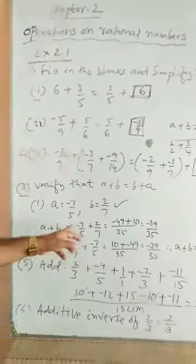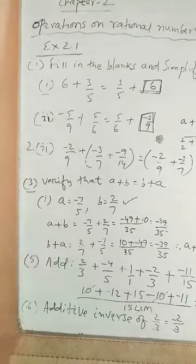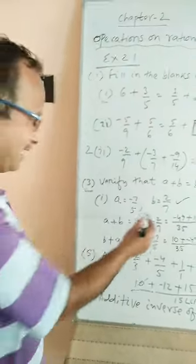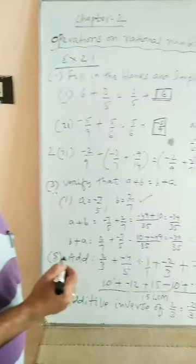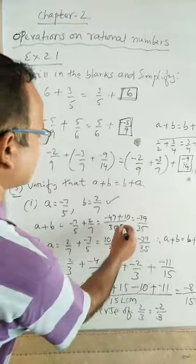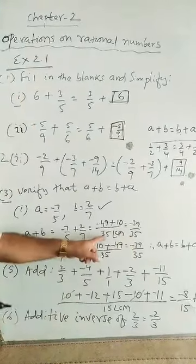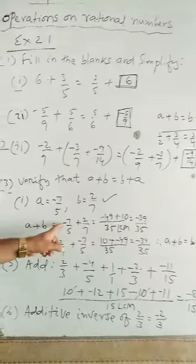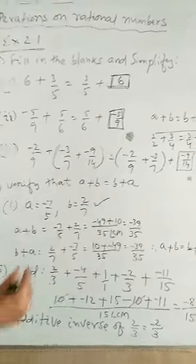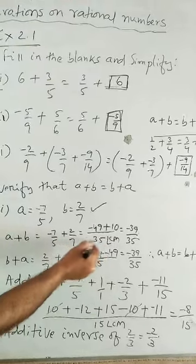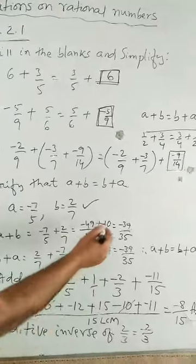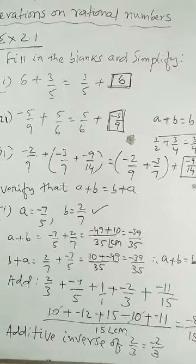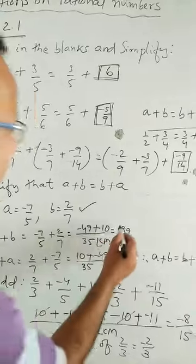So, a plus b, let us simplify, a plus b is equal to minus 7 by 5 plus 2 by 7. So, taking the LCM of 5 and 7, 35 is the LCM. So, 5, 7's are 35, percent is 7, 7 into minus 7. So, that is, minus 49 plus, now, 7, 5's are 5 into 2, that is 10.